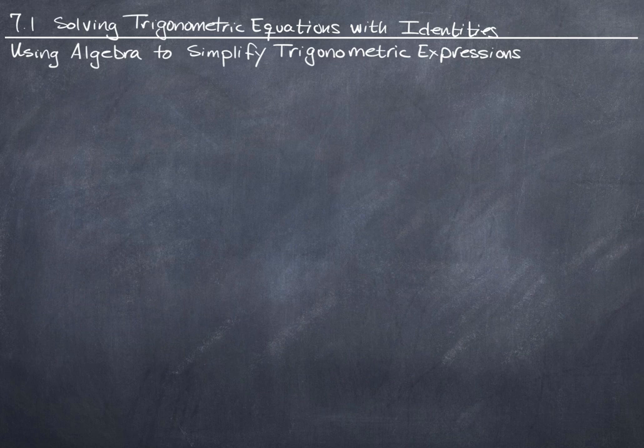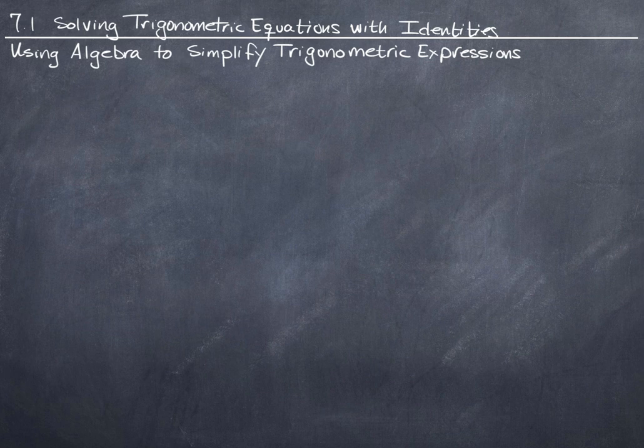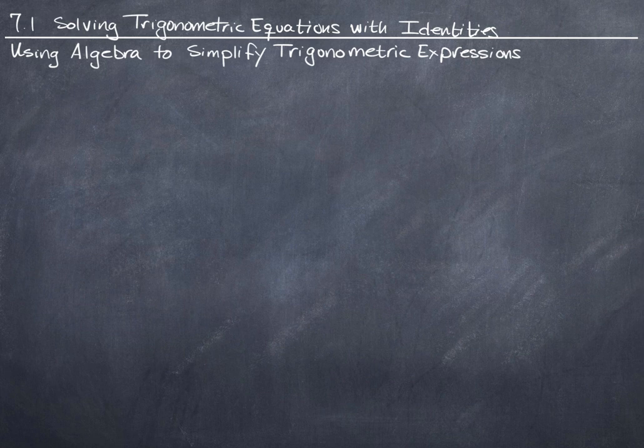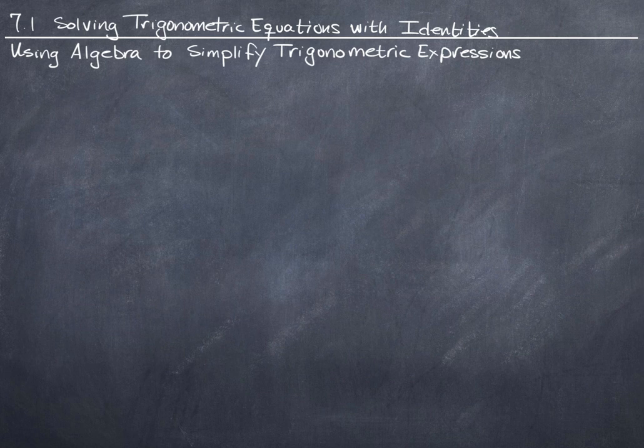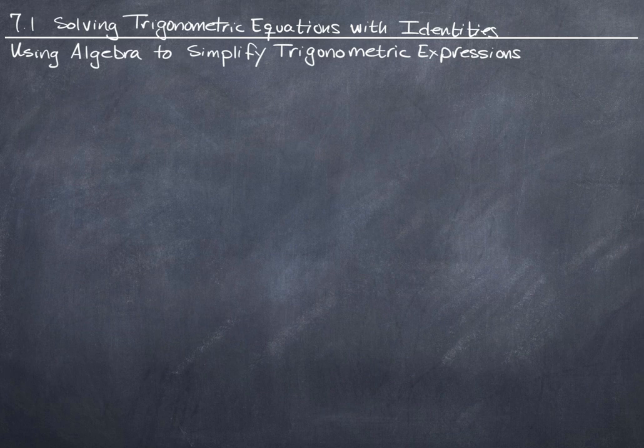For example, if I had sine plus cosine, then I could choose, if I wanted to, to replace the sine with one over cosecant, because it's equivalent. That's a known fact, a known identity. I could replace the cosine in that expression with one over secant, because that's the relationship those two things have.